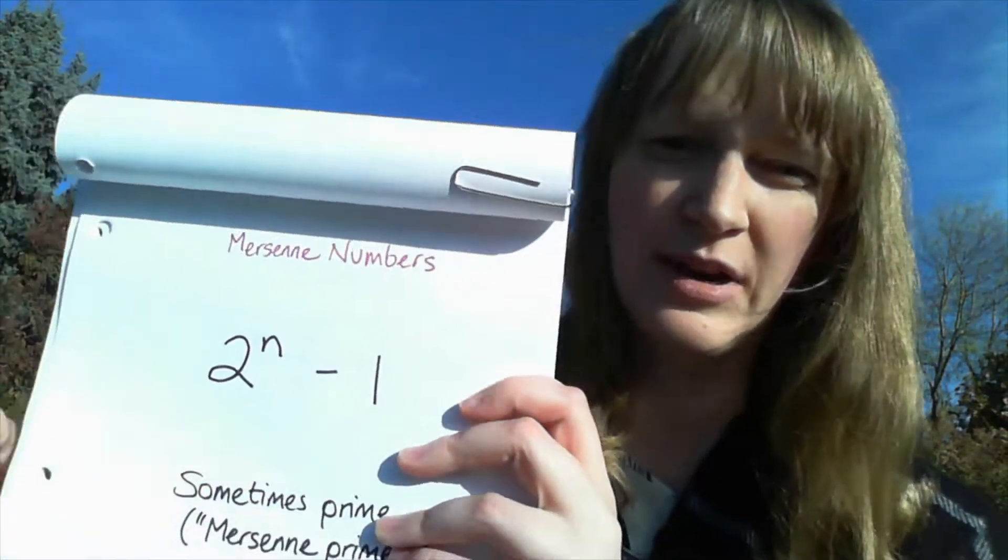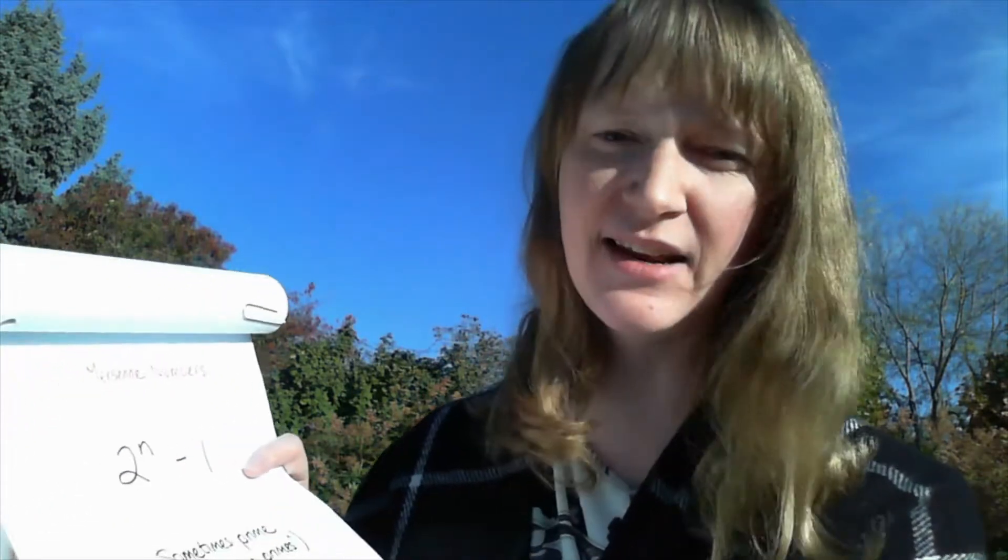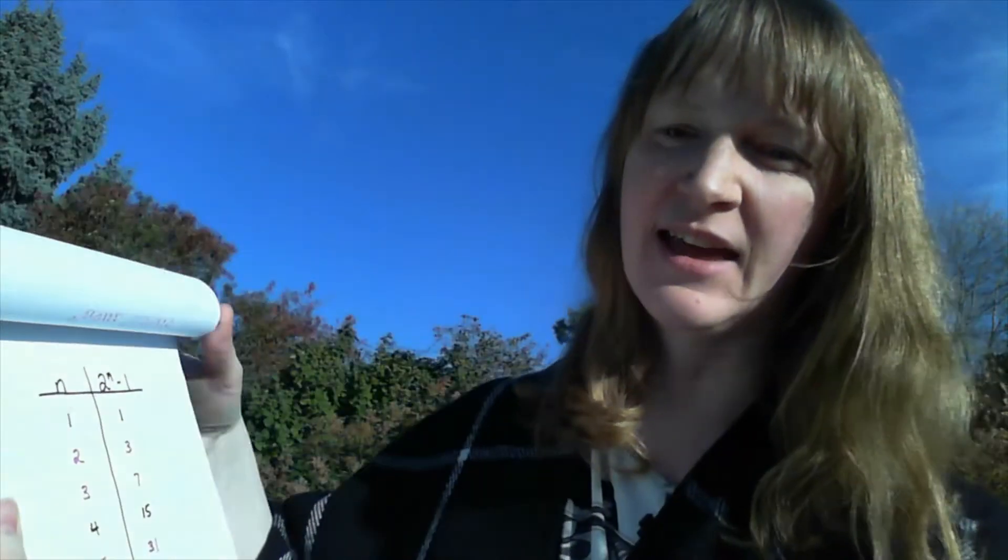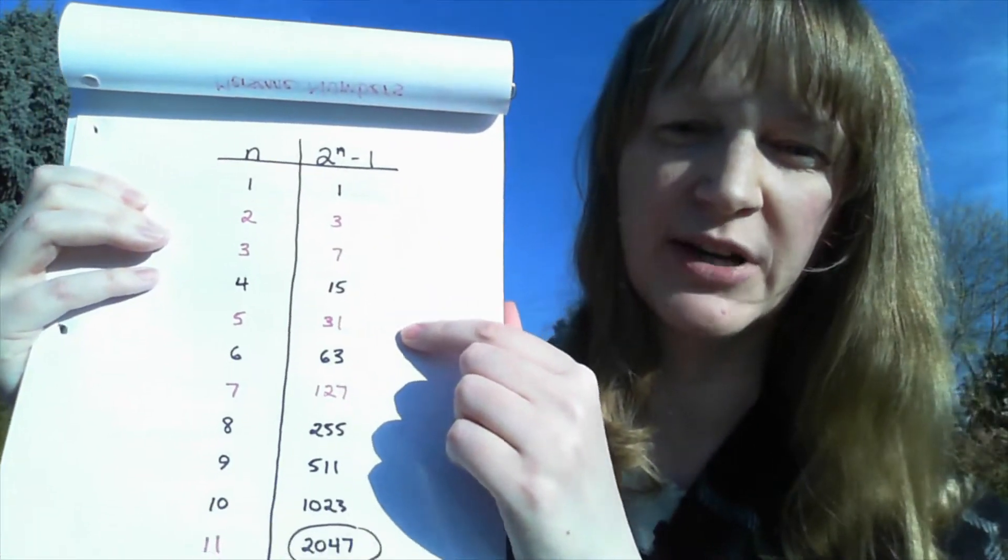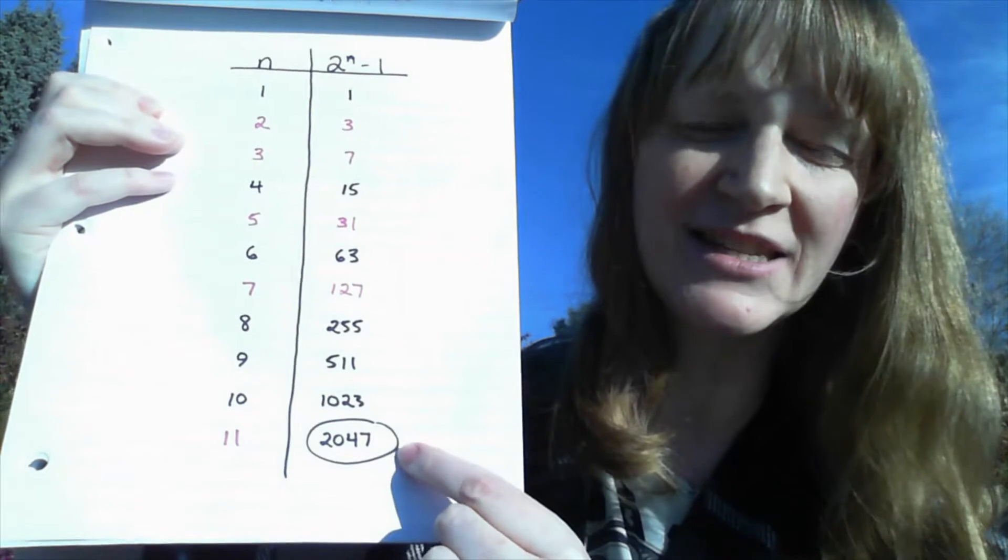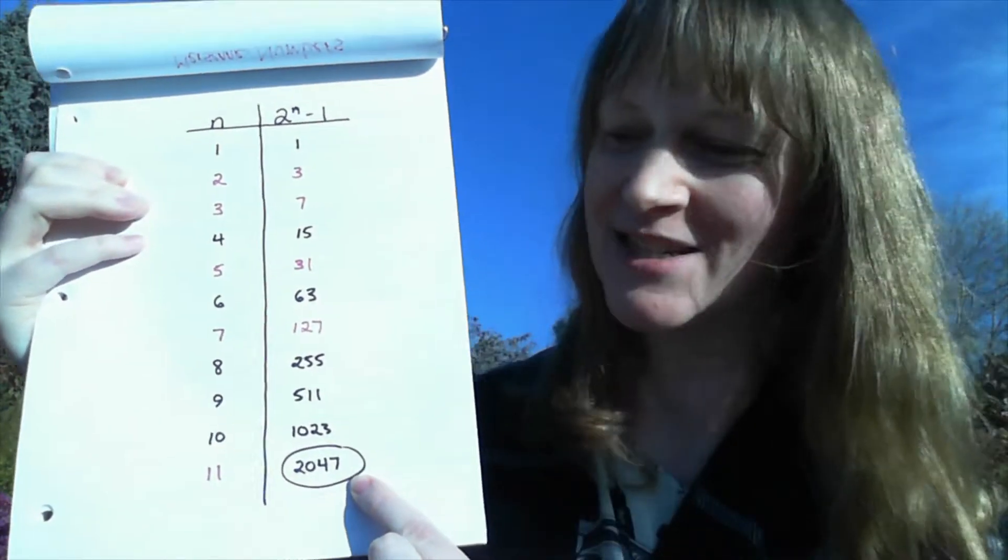Our quest is to find out whether or not there are infinitely many Mersenne primes, so numbers of this form which are prime. We do know that if n is composite, then the Mersenne number is composite, and if n is prime, then sometimes the Mersenne number is prime and sometimes it's not. This one for example is 23 times 89.